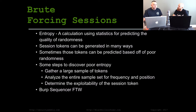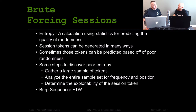Also, sometimes session tokens can be based on poor randomness — like if the key space used to generate the randomness is only capital letters A through Z or zero through nine. You can have a really long token, but if the uniqueness of the character set is low, that becomes low randomness. As long as we can take some steps to discover poor entropy, we can move forward with potentially brute forcing a session. The way we start down that road is by gathering a large sample of tokens.